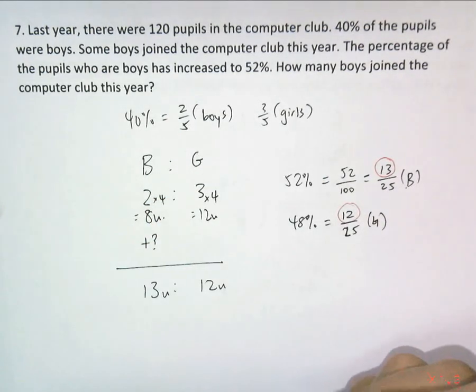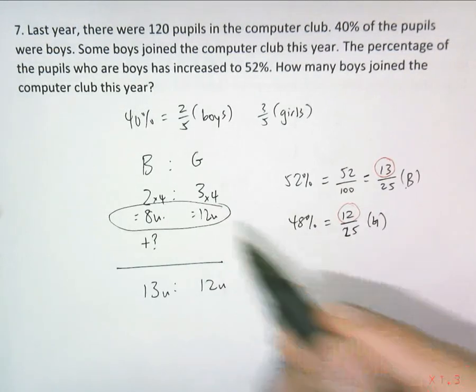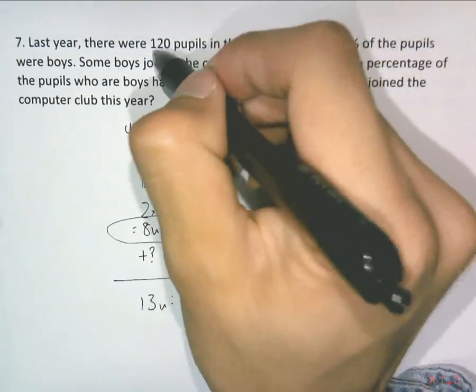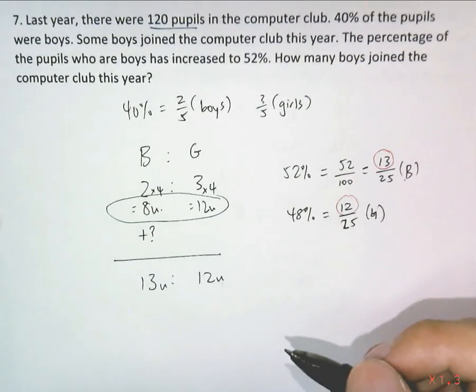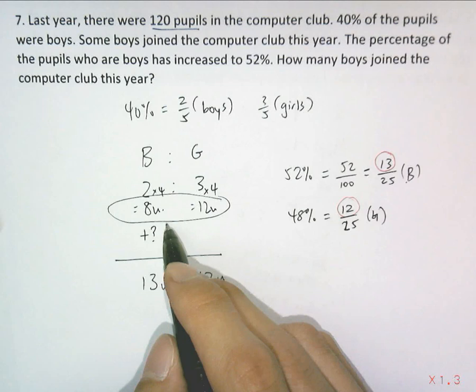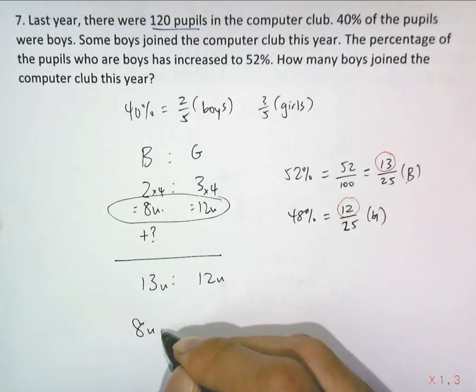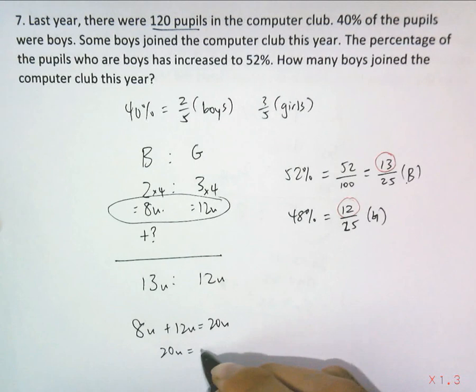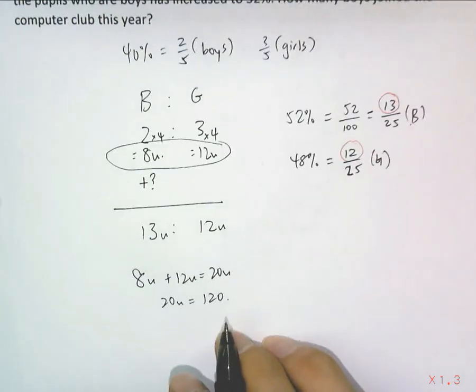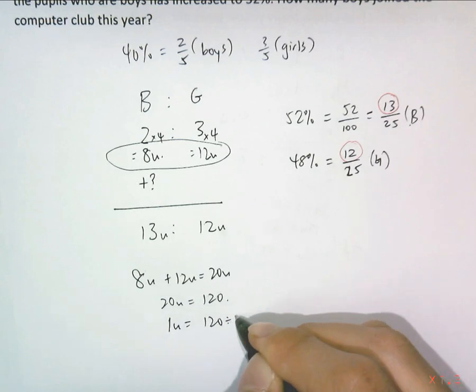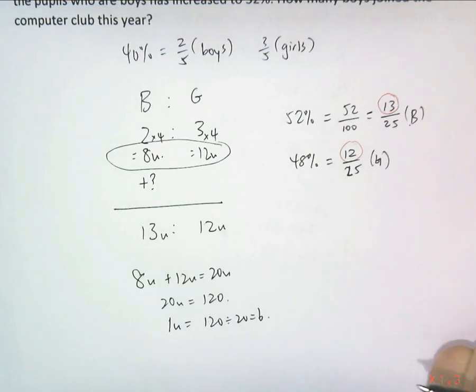Boys: 8 units. Since this is the new ratio, I have to use this for the 120 pupils. Collating the number of units total—not 2 to 3 but 8 to 12—so 8 plus 12 equals 20 units, which would be 120 pupils. 1 unit equals 120 divided by 20, which is 6.